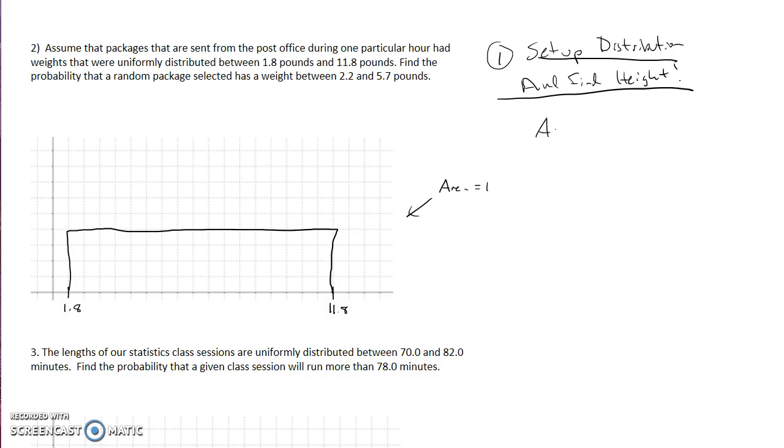I'm going to go back to my equation: area equals base times height. We know the area is equal to 1. Now let's think about if we know what this base is. Well, if I look at my numbers down here and figure, okay it starts at 1.8 and it goes to 11.8, we can find this distance.